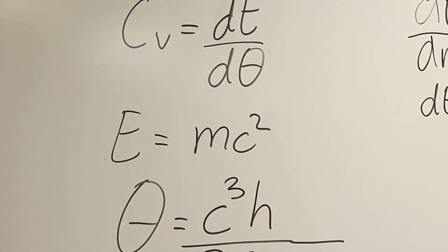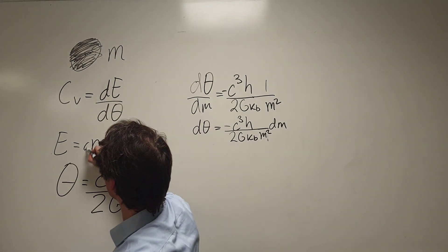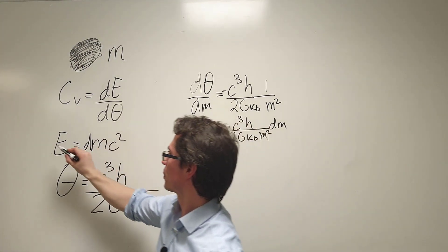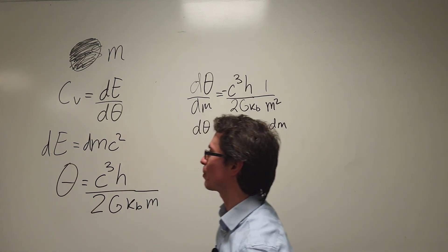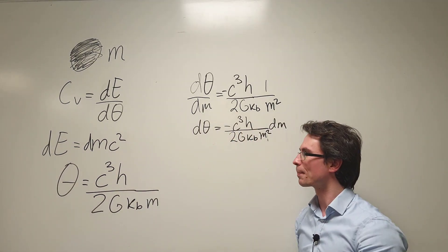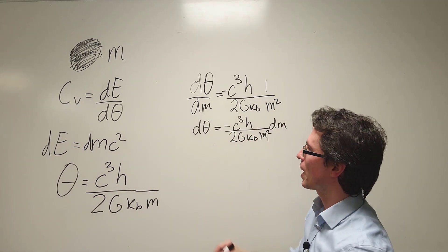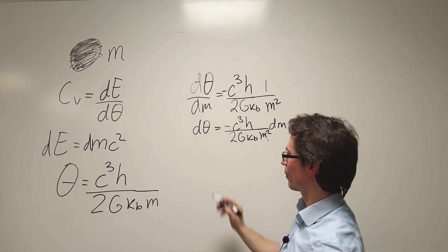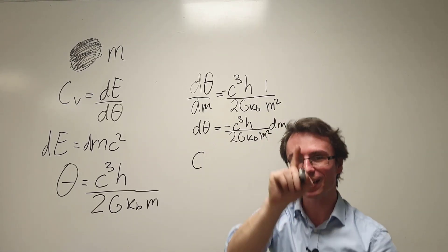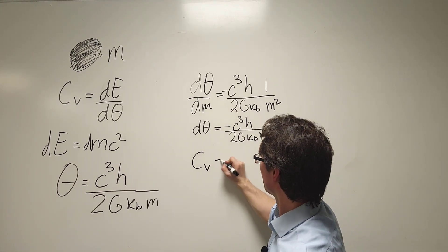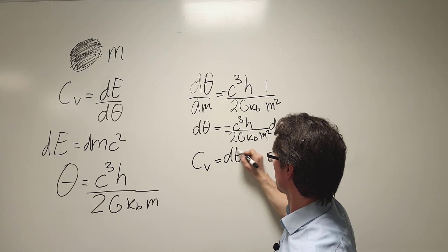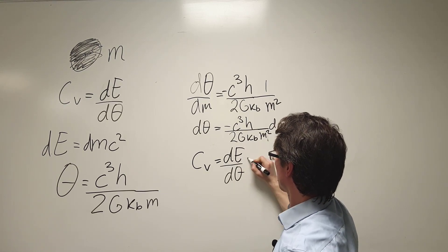Well let's use E is equal to m c squared. So I'm going to consider a tiny infinitesimal mass dm that's going to be producing a tiny infinitesimal energy dE. So we know that dE is equal to dm c squared and we could just substitute that back into our equation for the heat capacity of a black hole which is just dE over d theta.